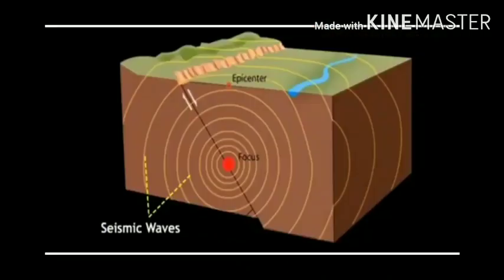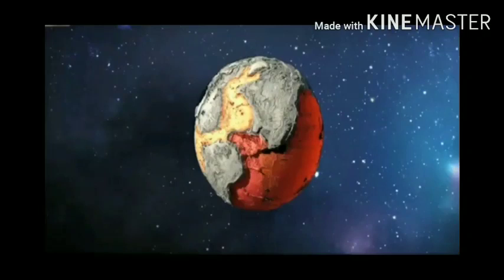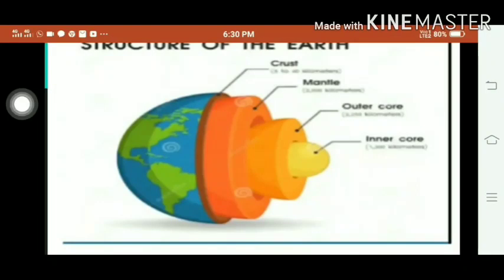Several earthquakes occur in various places on the earth every year, and so seismic waves are generated. These waves travel through the interior of the earth. The study of their direction and velocity helps us to estimate about the interior of the earth. Man has also tried to dig deep bore holes in the interior. While going from the earth's surface to its core, major changes occur in temperature and density.